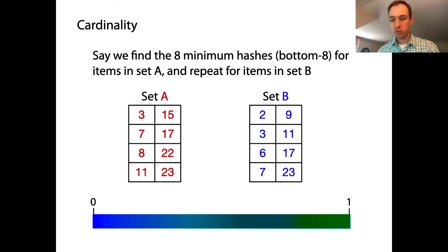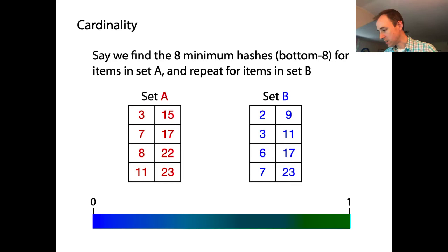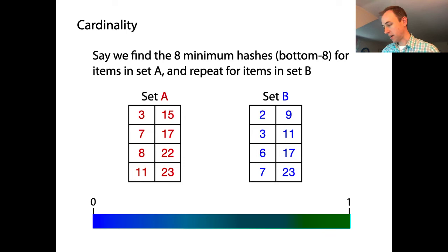Let's say we have large data sets A and B, and we find the 8 minimum hashes for all items in set A — applying a hash function and keeping the 8 smallest hash values seen so far. Do the same for set B. At the end, for set A we have 8 small hash values, and similarly for B. Looking at these two sets of 8, we can see some values shared between them — 3, 7, 11, 17, 23 are shared — indicative of items in the intersection. Others like 2 and 6 are not shared, indicative of items in the symmetric difference.